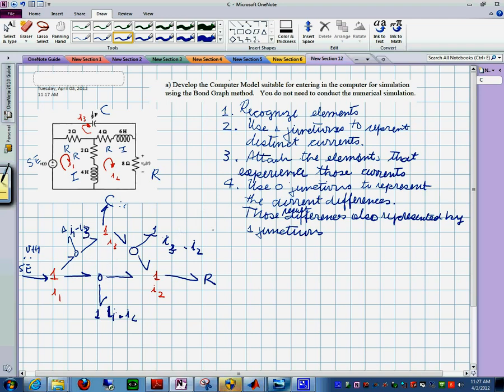Up here is three so we don't mess up. Yeah, we saw the difference. Now what about number five? Why do we do this? You need to attach the elements. What elements? What elements that experience those current differences?